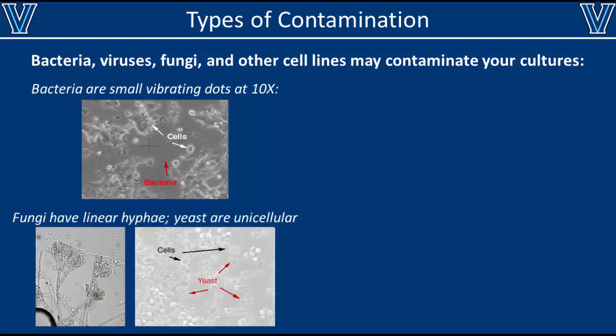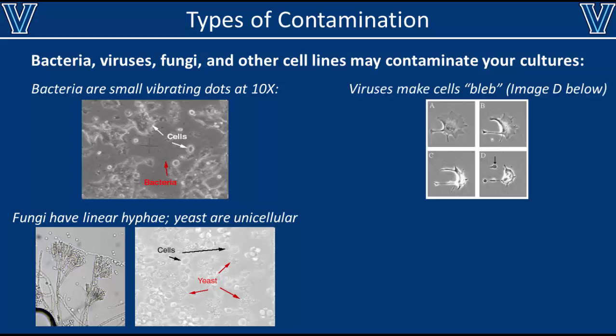Fungi and yeast are another common type of contamination, familiar both in the lab and at home. Most fungi and molds are readily identifiable by the circular fibrous colonies they form, visible under the microscope. Yeast, however, is a unicellular fungi, so they're much harder to detect by eye — they appear as small dots, bigger than bacteria but smaller than animal cells, usually growing in clumps, as seen here at 10x magnification.